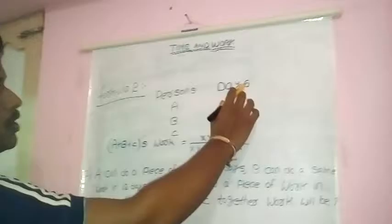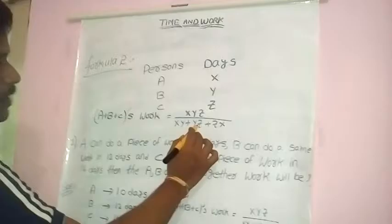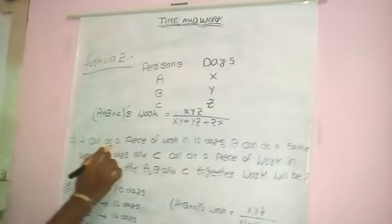In Formula 2, if person A can do a work in X days, person B can do the work in Y days, and person C can do the work in Z days, then A plus B plus C together can complete the work in XYZ divided by (XY plus YZ plus ZX).